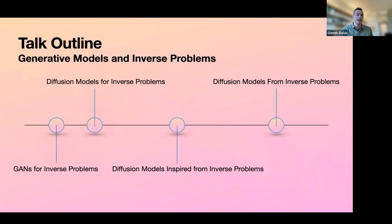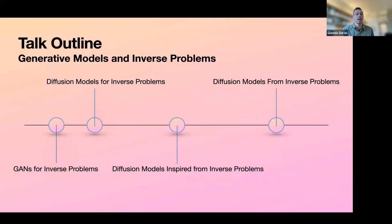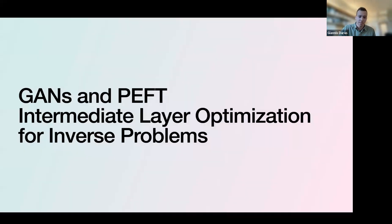Here's a brief outline. First, we'll talk about early work using pre-trained GANs to solve inverse problems. Then we'll explain why we gradually switched from GANs to diffusion models. Once we saw diffusion models working well in practical domains like MRI, we thought maybe we could get ideas from the inverse problems world to create better diffusion models — what we'll call 'soft diffusion.' And at the end, we'll talk about ongoing work: training generative models in the absence of real data, only using destroyed data. The theme is generative models for and from inverse problems.